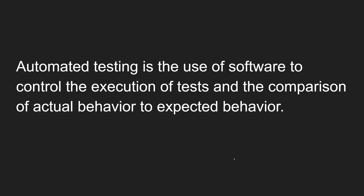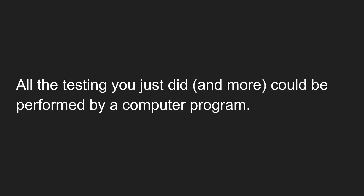Now let's look at automated testing. Automated testing is the use of software to control the execution of tests and compare actual behavior to expected behavior. Here too, it checks actual behavior against expected behavior, but it is done by software — there is no human interaction. The software controls the test execution and checks actual behavior with expected behavior.